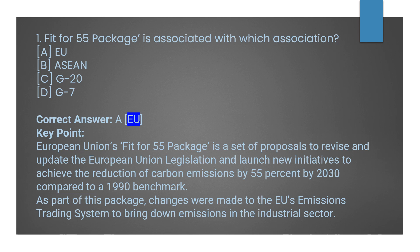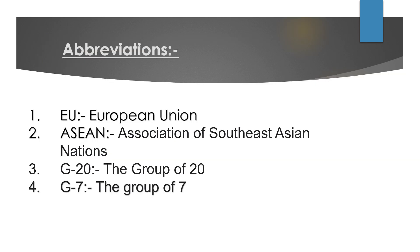As part of this package, changes were made to the EU's emission trading system to bring down emissions in the industrial sector. Some abbreviations from this question: EU stands for European Union; ASEAN stands for Association of Southeast Asian Nations; G20 stands for Group of 20 countries; and G7 stands for the Group of Seven countries. We share these so you know the full forms and can memorize them more easily.